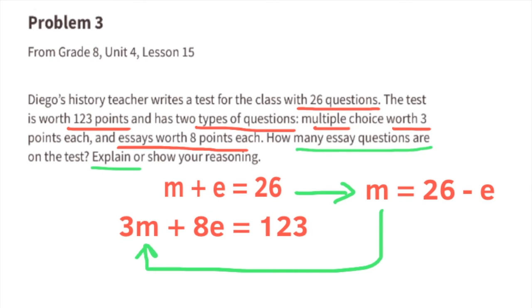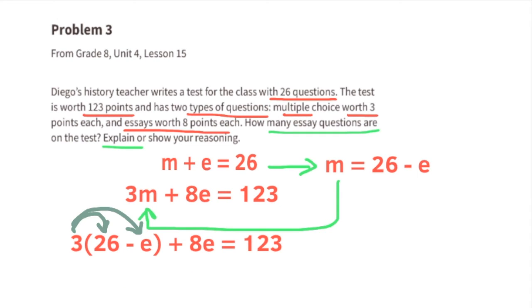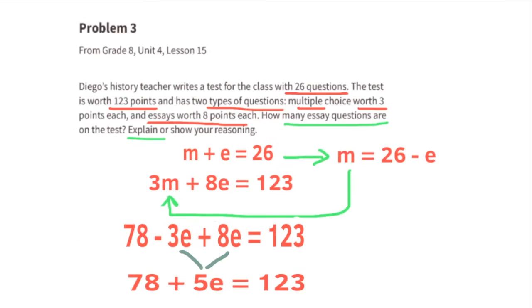Now that we know what M equals, we can substitute 26 minus E where the M is in this second equation. The new equation reads 3 times 26 minus E plus 8E equals 123. Use the distributive property and multiply 3 times 26 and 3 times minus E. We need to collect like terms. Negative 3E plus 8E. That's the same thing as 8E minus 3E, or 5E.